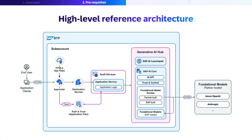Let's examine the high-level reference architecture for accessing generative AI models through SAP BTP. This diagram shows the complete flow from end-users to foundational models. Starting from the left, end-users and application clients connect via HTTPS to the SAP BTP environment. The request first passes through an app router connected to an HTML5 app repository, then flows to a destination service, which directs it to a SaaS services layer containing the application service with the core application logic.